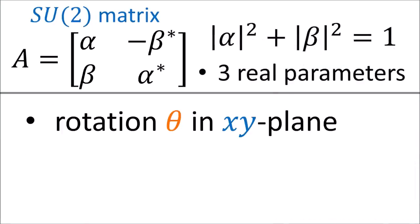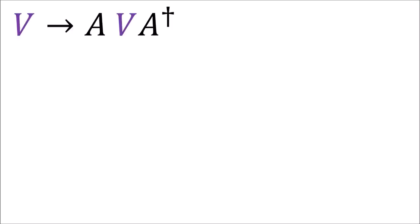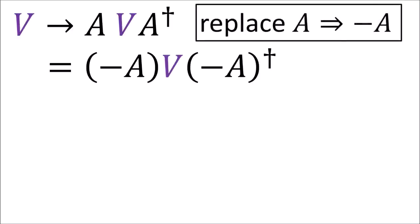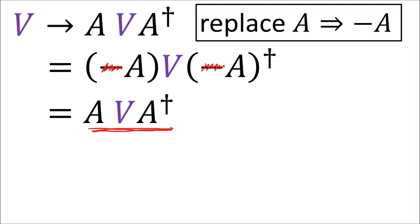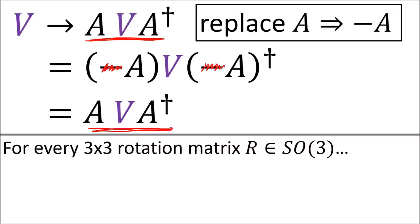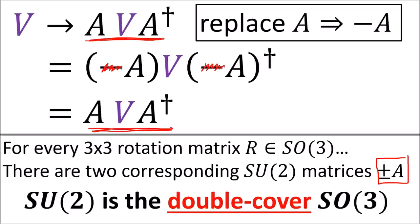Another thing to notice is that the positive version of an SU(2) matrix and the negative version of an SU(2) matrix perform the exact same rotation, since the negative signs cancel out in the double-sided transformation. This means that for every 3x3 rotation matrix in the group SO(3), there are two corresponding rotation matrices in SU(2) that do the same rotation. We'll see later that this means SU(2) is the double cover of SO(3).